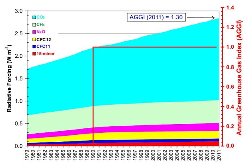Some gases have indirect radiative effects whether or not they are greenhouse gases themselves. This happens in two main ways. One way is that when they break down in the atmosphere they produce another greenhouse gas. For example, methane and carbon monoxide are oxidized to give carbon dioxide, and methane oxidation also produces water vapor.